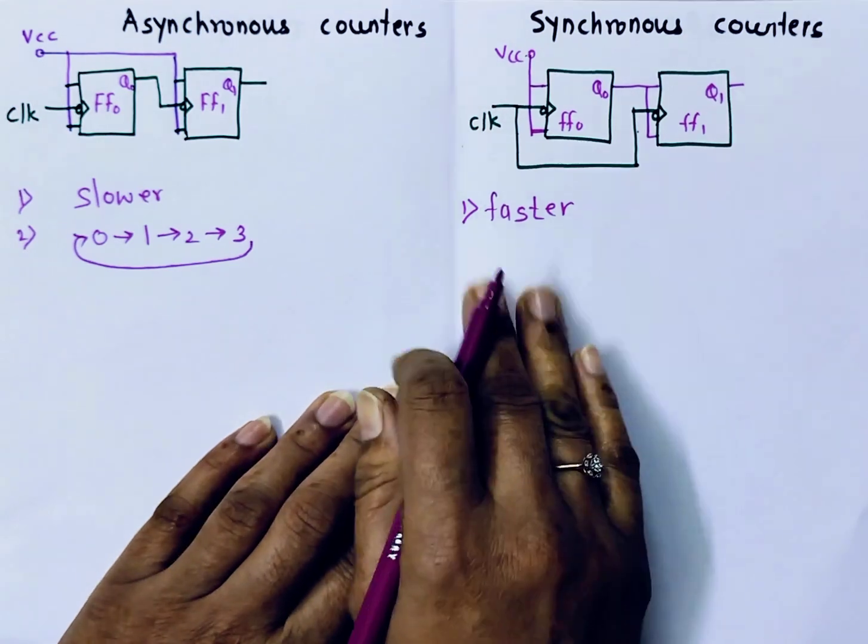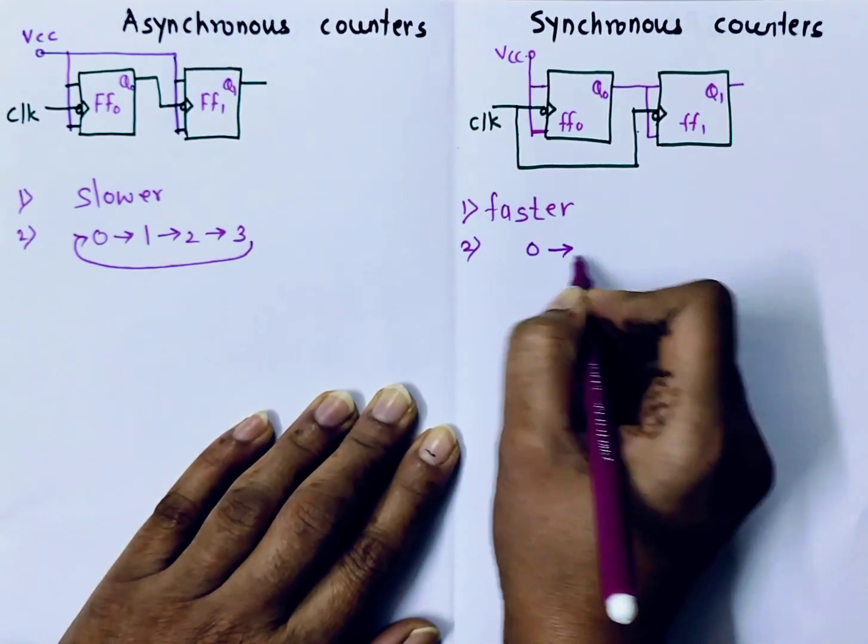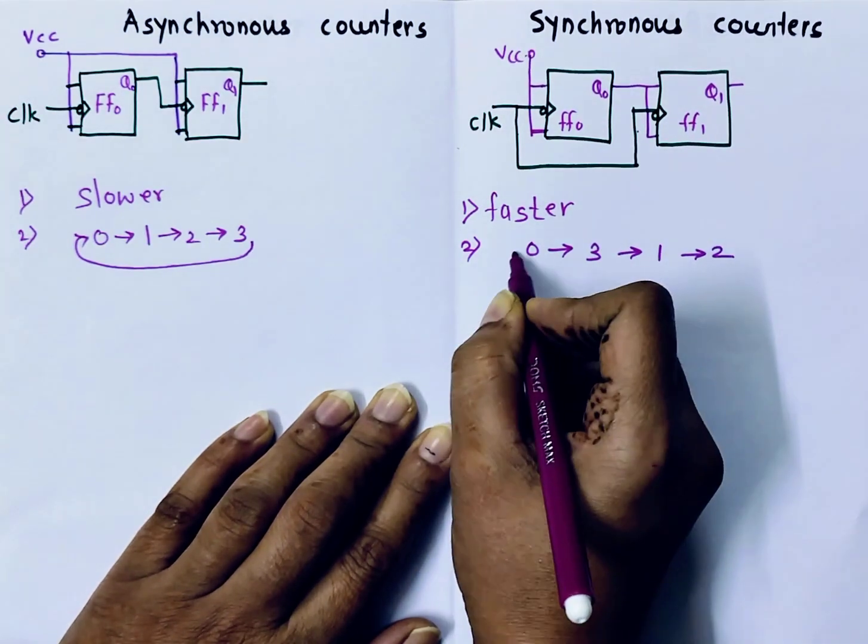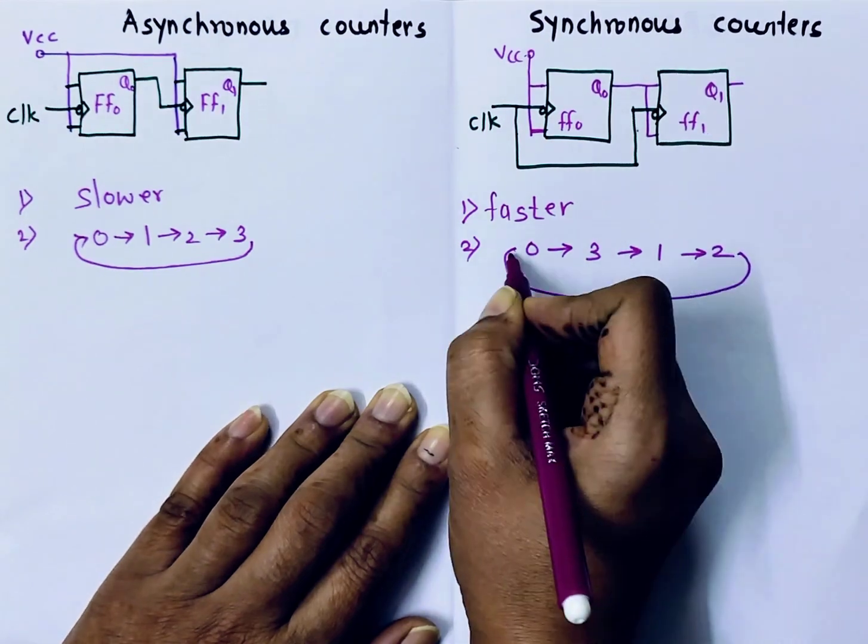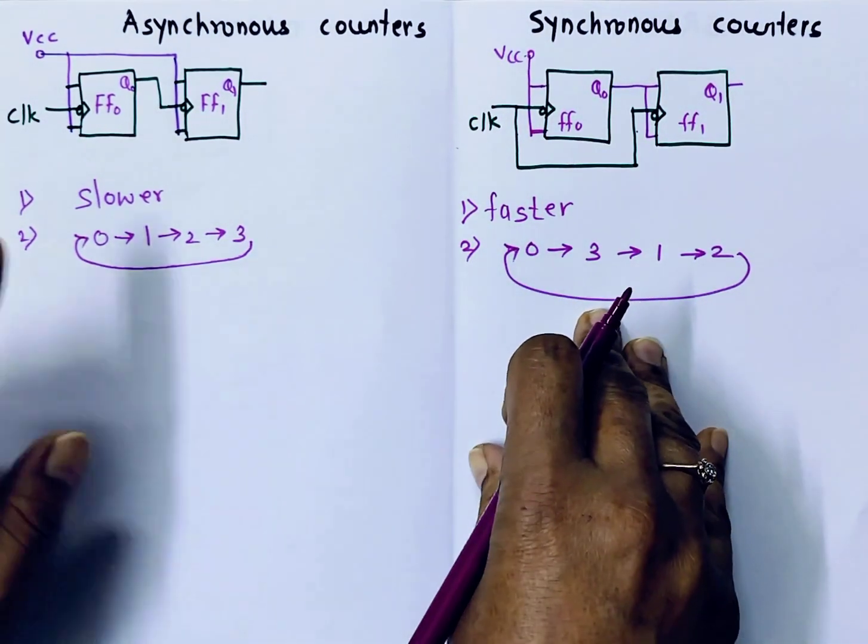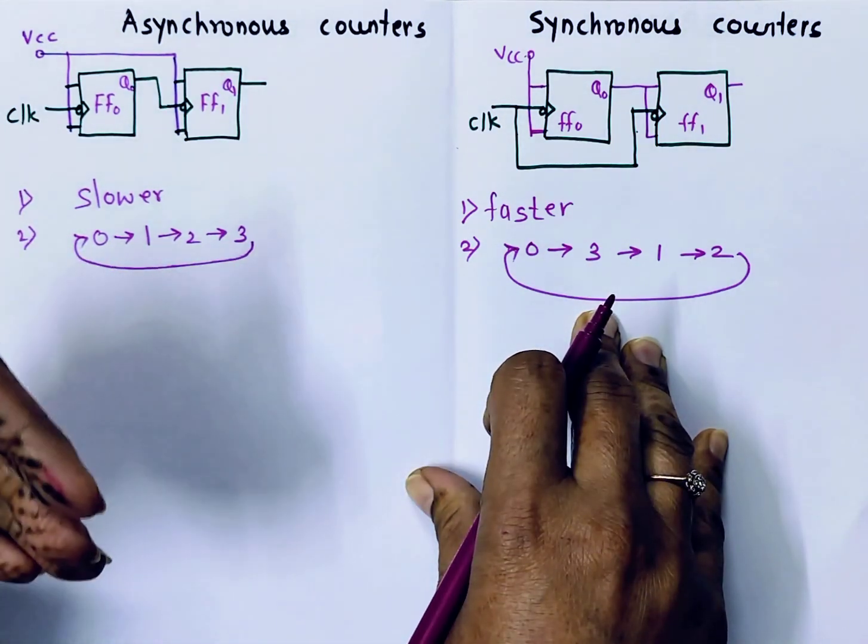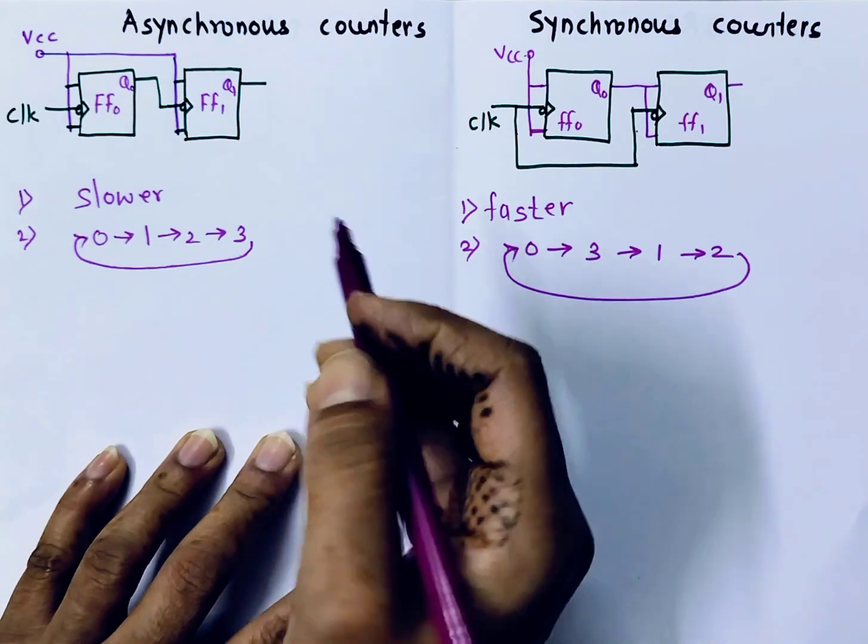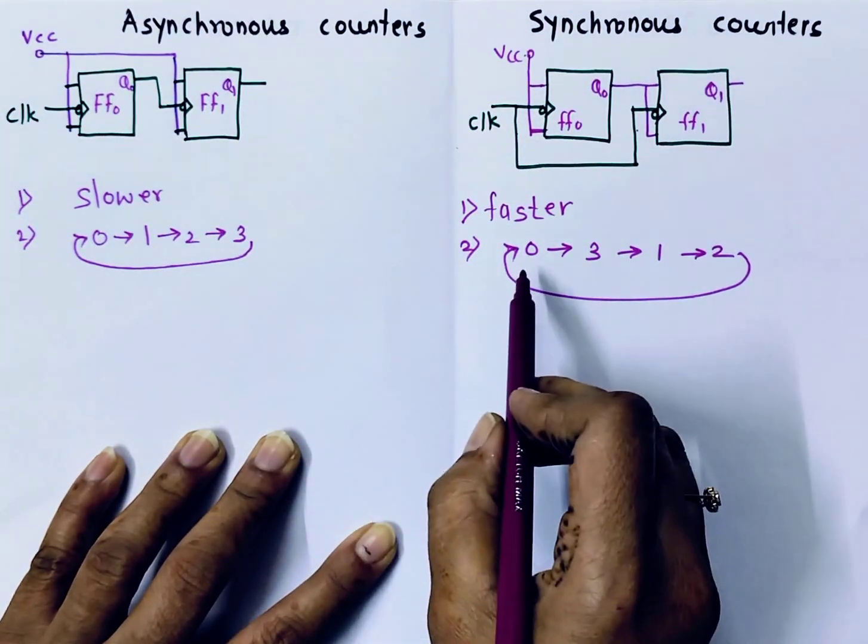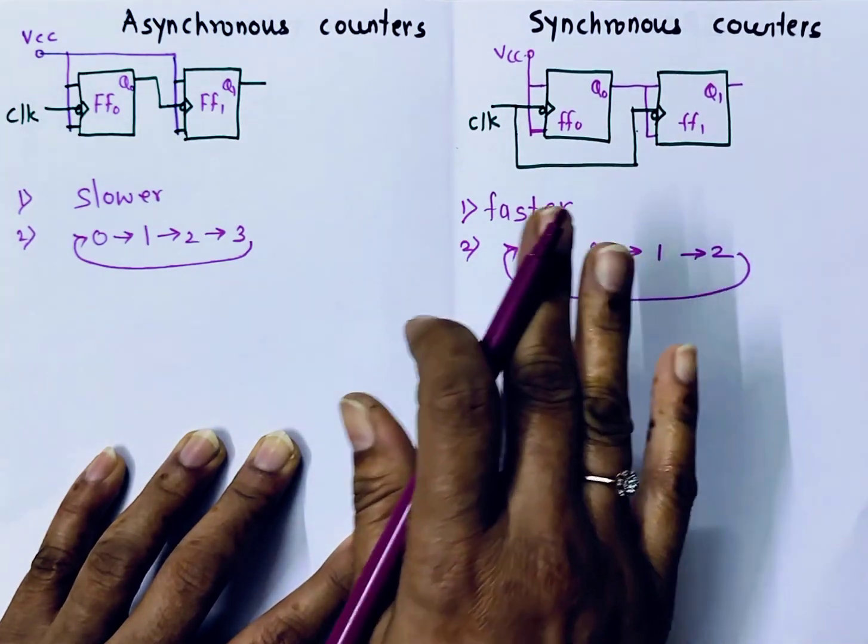Whereas, in case of Synchronous counters, they can generate count like 0, then 3, then 1, then 2. In any sequence, they can generate count. This is the main difference between the two. Here, it can generate count 0, 1, 2, 3. Or in case of down counters, it will generate count from 3, 2, 1, 0. Whereas, Synchronous counters can generate output in any sequence.